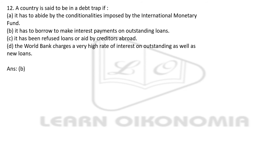If a country is said to be in a debt trap, what happens? Options are: it has to abide by conditionalities imposed by the IMF; it has borrowed to make interest payments on outstanding loans; it has been refused loans or aid by creditors abroad; the World Bank charges very high interest rates on outstanding and new loans. The right answer is option B — a country is in a debt trap if it has to borrow to make interest payments on outstanding loans.